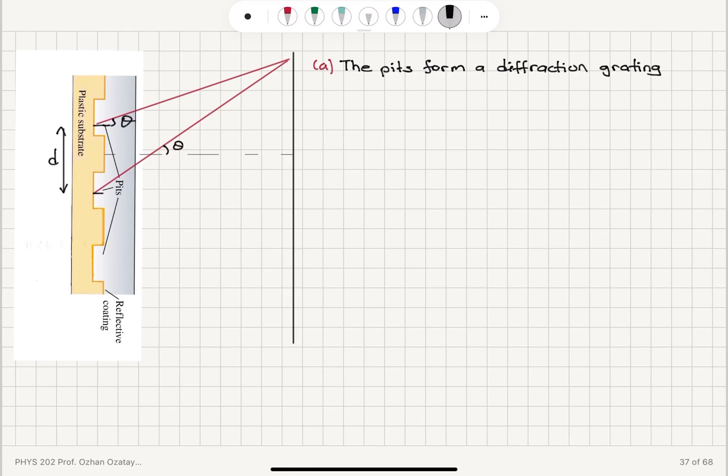The path difference for two neighboring pits here, light coming from two neighboring pits, is D sin theta. And that must be equal to integer multiple of wavelengths.